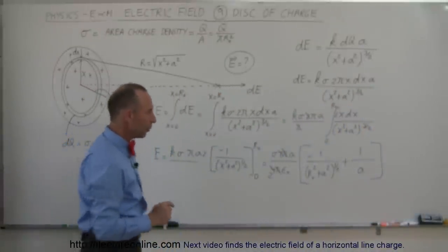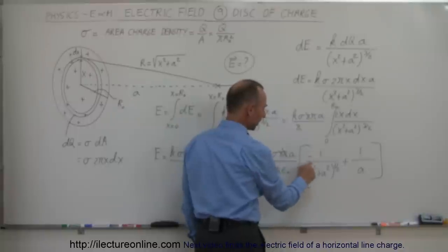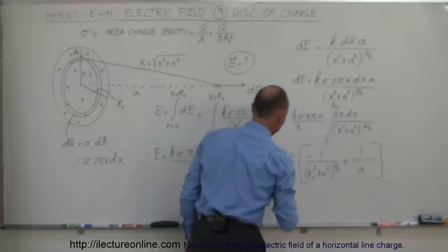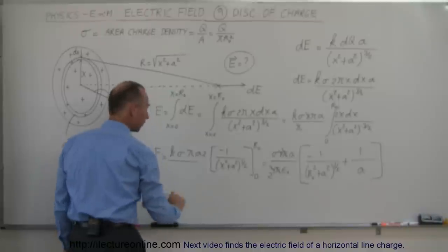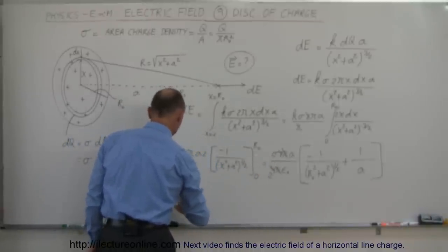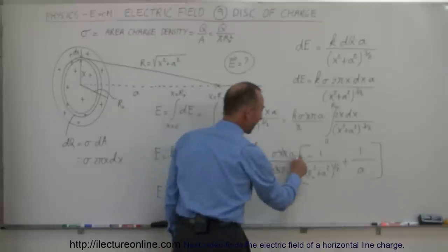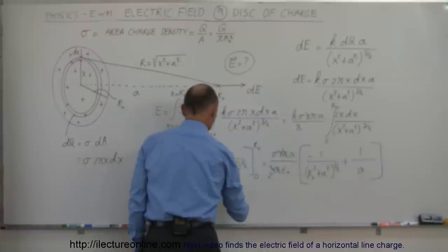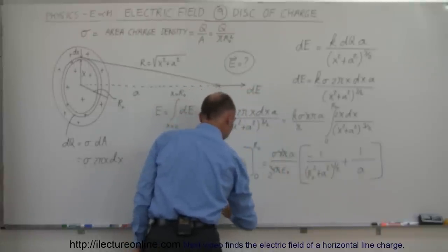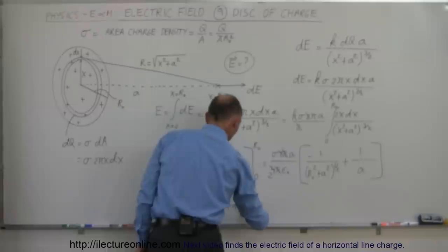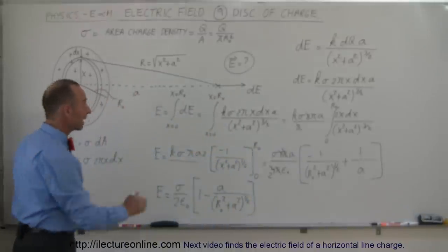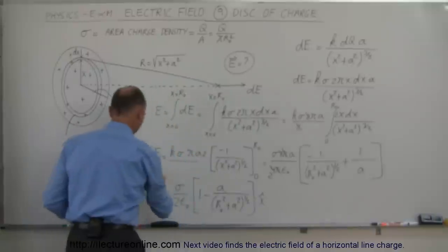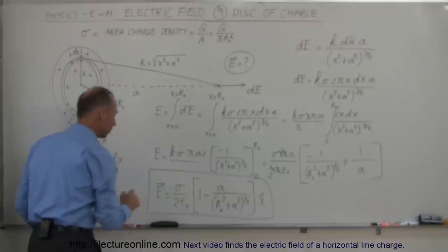Almost done. Multiplying through by A: the A over A term becomes simply 1, and switching the order — since that term is positive and the other is negative — the electric field E equals sigma over 2ε₀ times the quantity 1 minus A divided by the square root of R-nought squared plus A squared. That gives us the electric field strength at this location due to the charged disk. To write it as a vector, we add a unit vector in the x-direction.